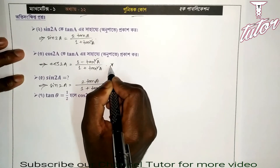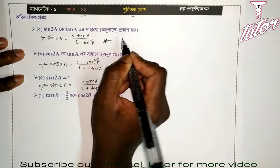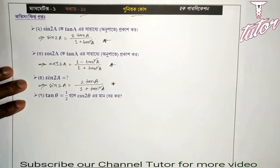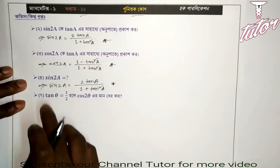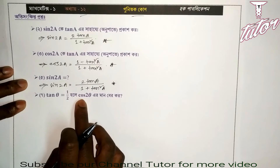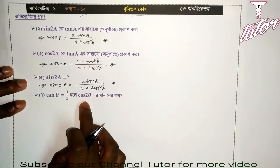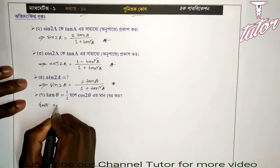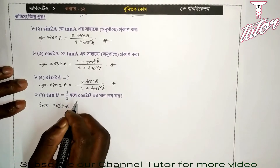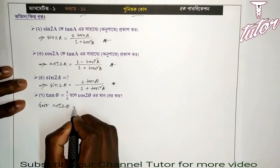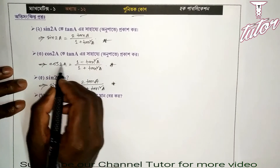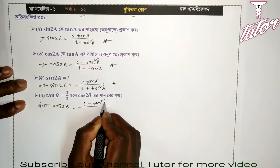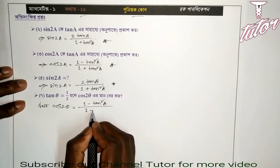If we write tan a by 2 equals tan theta, then cos 2 theta, so for cos 2a we write a, and 1 plus tan squared a. So cos 2a equals 1 minus tan squared a by 1 plus tan squared a.